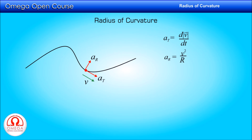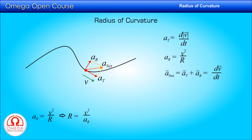The net acceleration of the particle is the vector sum of these two accelerations, which is mathematically equal to the derivative of the velocity vector with respect to time. Now, in order to find the radius of curvature of any path at any given point, we need to define a motion of a particle that travels on the path. If we can find the instantaneous velocity and acceleration of the particle, using the above relations we can always calculate its radius of curvature. Radial acceleration is the square of instantaneous speed divided by radius of curvature, which implies radius of curvature is the square of instantaneous speed divided by radial acceleration. So, if we know instantaneous velocity and radial acceleration, we can calculate radius of curvature.